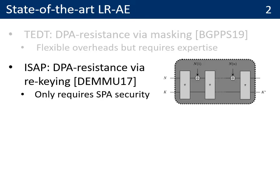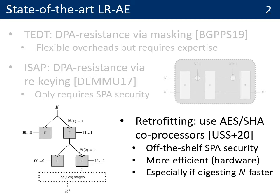As a step in the direction of making things easier, you have ciphers like ISAP, where the idea is to obtain DPA resistance thanks to re-keying, and therefore to rely only on SPA security. Here, you can generate a fresh key by absorbing a fresh nonce very slowly, at the extreme bit by bit. Last year at CHES, there was a paper called Retrofitting, where the idea was to use AES and SHA co-processors by relying on the leakage-resilient PRF. The observation was that even SPA security may not be trivial to obtain on low-end devices, and therefore hardware acceleration can help.